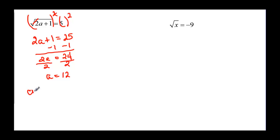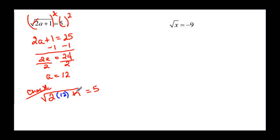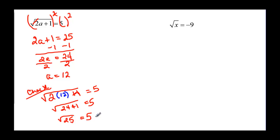Then we check — and remember, you have to check; it's not an option here. The square root of 2 times our a, which is 12, plus 1 should equal 5. This gives us the square root of 24 plus 1, or the square root of 25, and we know the square root of 25 is equal to 5. So a does equal 12.